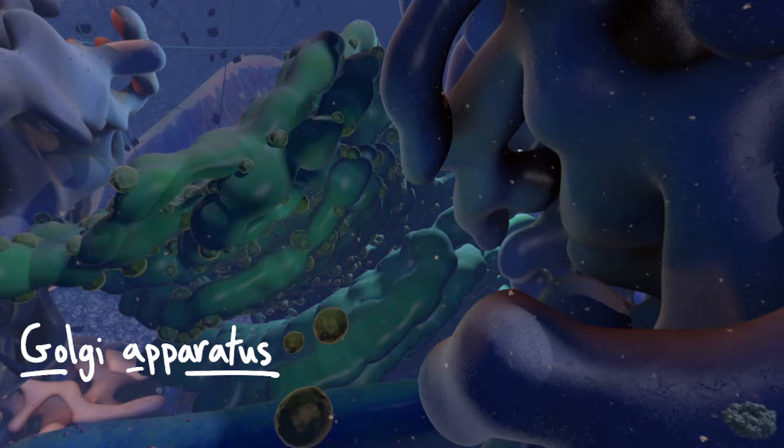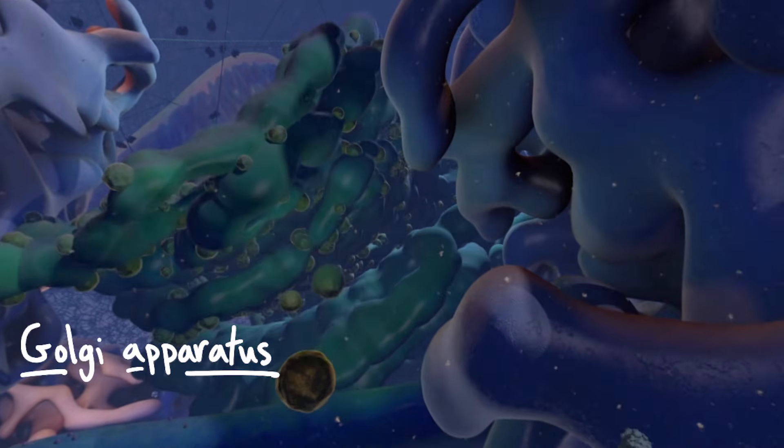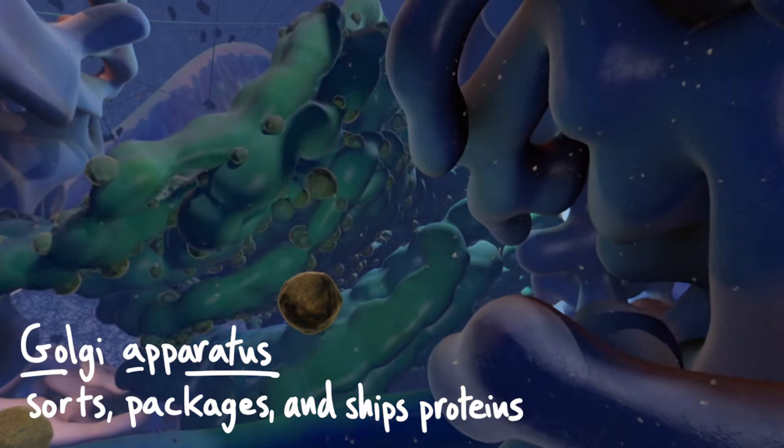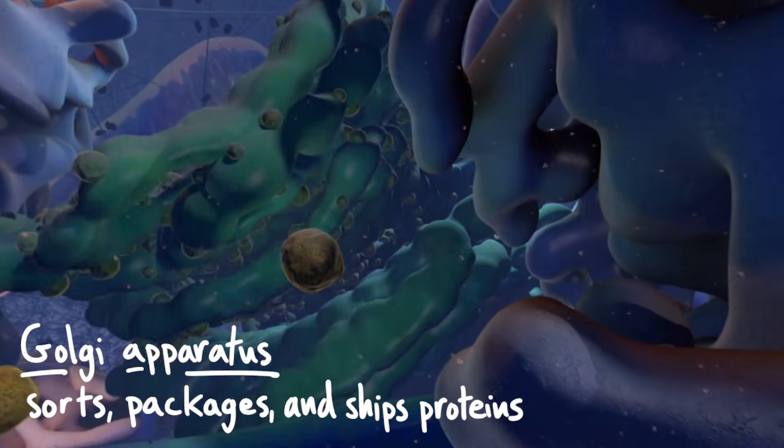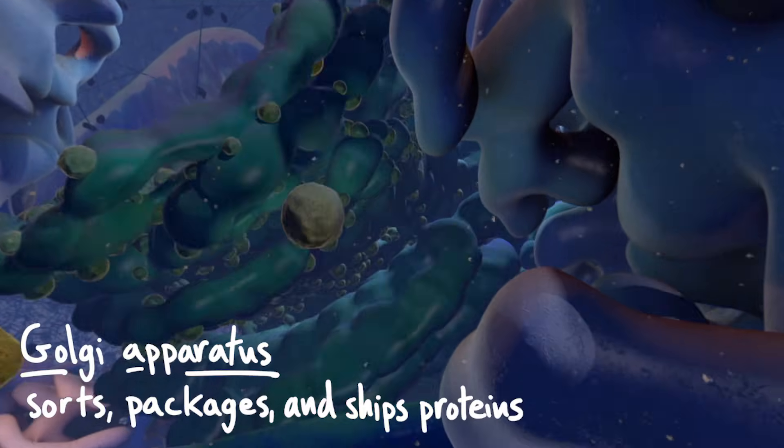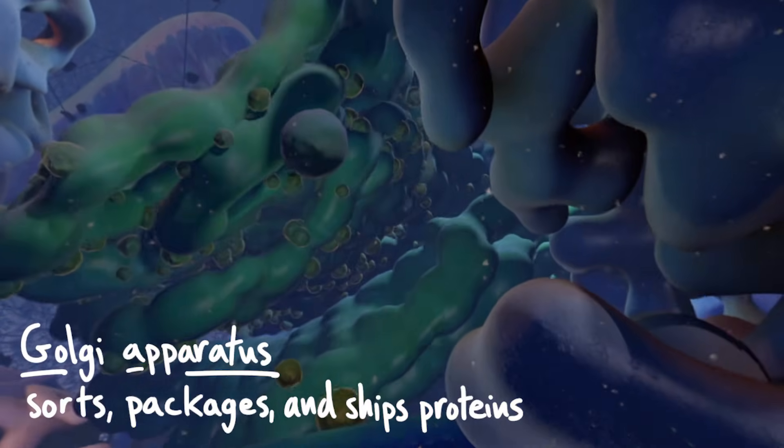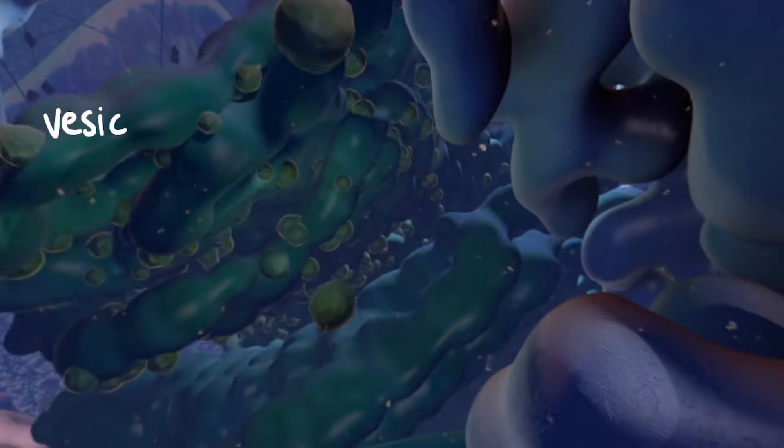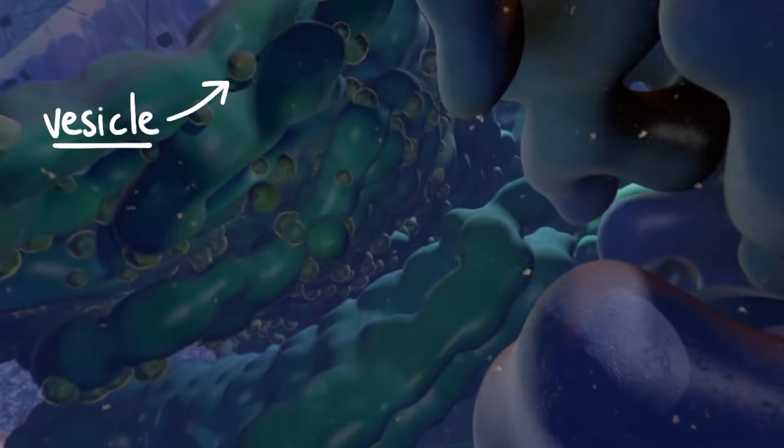See how those round blobs are coming off of it? The Golgi is like the post office of the cell. It receives proteins from the ER, sorts them, packages them up, and ships them off to their proper destinations. Proteins get packaged up inside those round blobs, which are called vesicles.